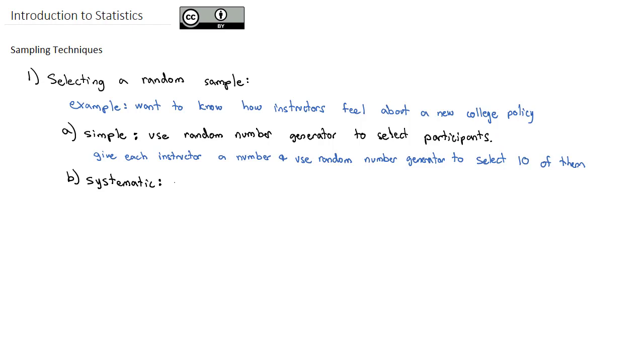Systematic random sampling means we're going to select every nth member from a random starting point.